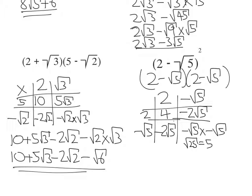My terms I've got is 4 from the top, minus 2 root 5 minus 2 root 5 plus 5. So 4 plus 5 is 9, and minus 2 root 5 minus 2 root 5 is minus 4 root 5. So my answer is 9 minus 4 root 5.